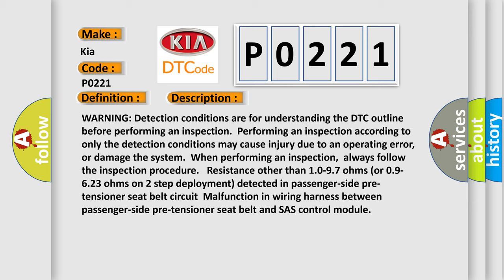Always follow the inspection procedure. Resistance other than 10-97 ohms or 09-623 ohms on two-step deployment detected in passenger side pre-tensioner seat belt circuit malfunction in wiring harness.